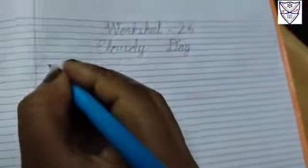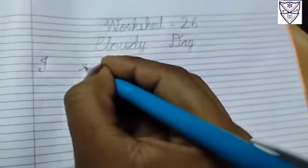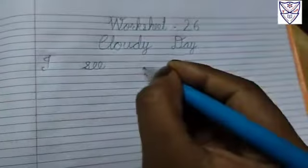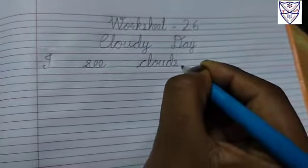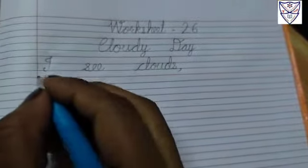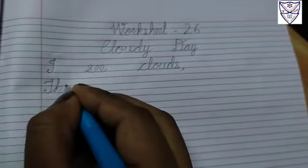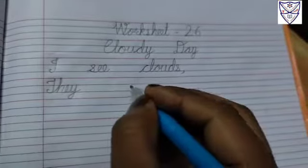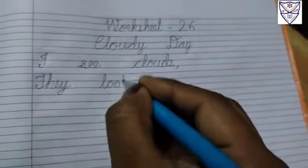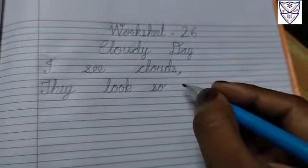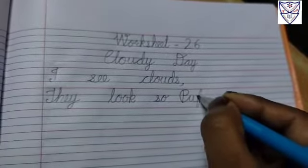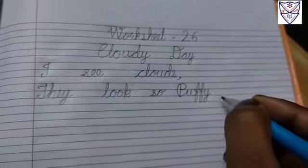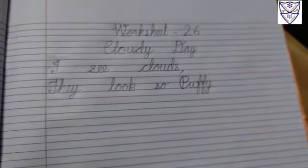I see clouds. Capital I, small S, double E, C, clouds. Comma. They look so capital P, fluffy, small U, double F, Y. Full stop. They look so fluffy.